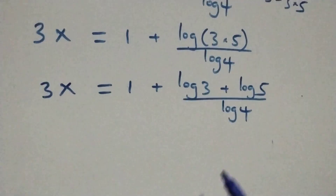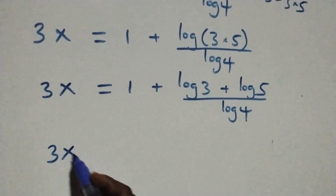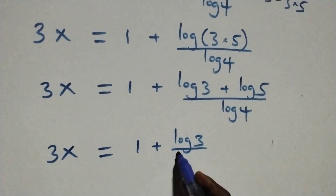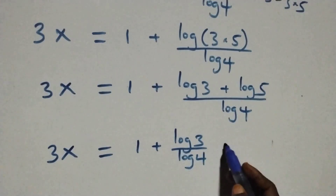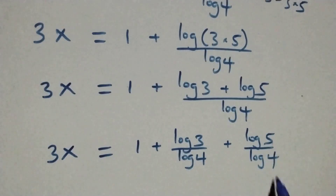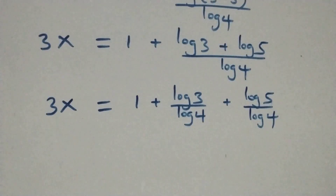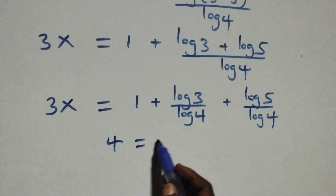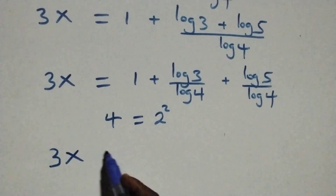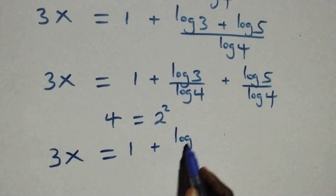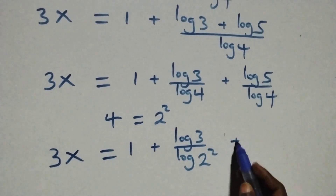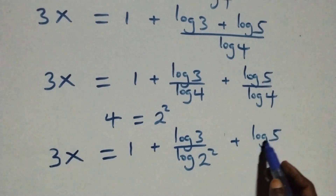Then we separate this into two fractions and have 3x equals 1 plus log 3 over log 4 plus log 5 over log 4. Next step, we can write 4 as 2 times 2, which is 2 squared. So what we have here becomes 3x equals 1 plus log 3 over log(2 squared) plus log 5 over log(2 squared).